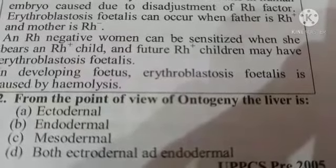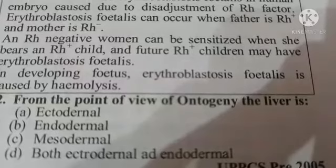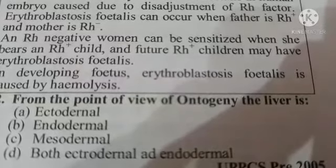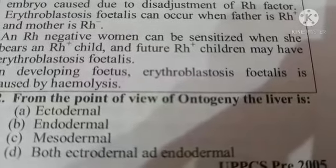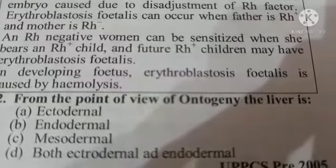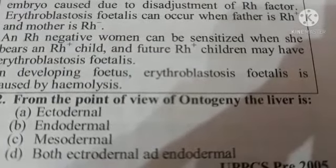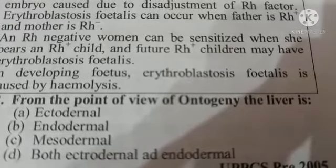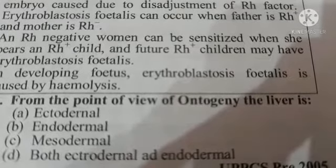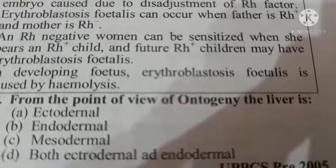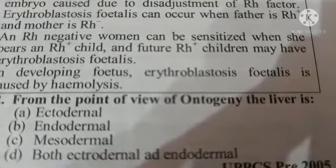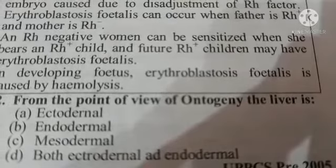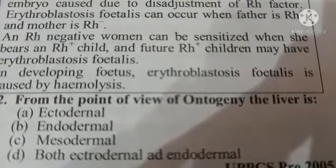Next question: from the point of view of ontogeny, the liver is — Option A: ectodermal, Option B: endodermal, Option C: mesodermal, Option D: both ectodermal and endodermal. The correct answer is Option B: endodermal.